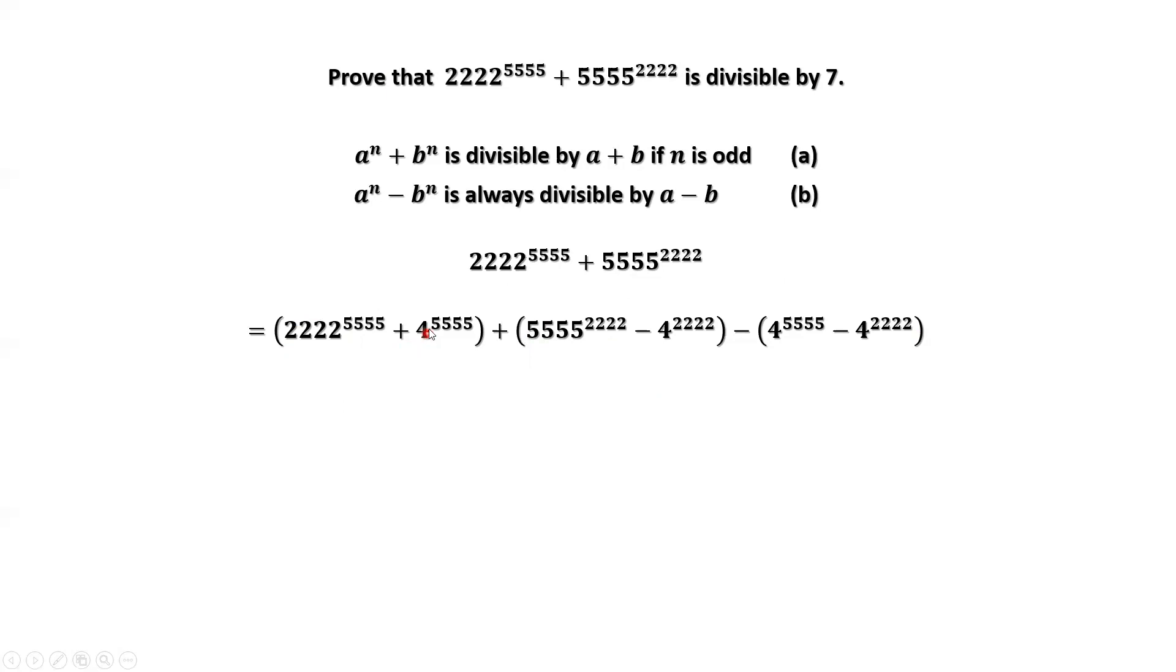Plus 4 to the power of 5555. Here is a minus 4 to the power of 5555. Here we have minus 4 to the power of 2222. Here we have minus minus which is plus 4 to the power of 2222. We are going to prove each group is divisible by 7. This is the basic logic of this proof.